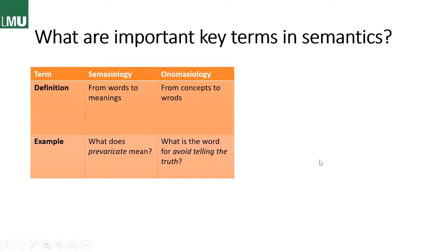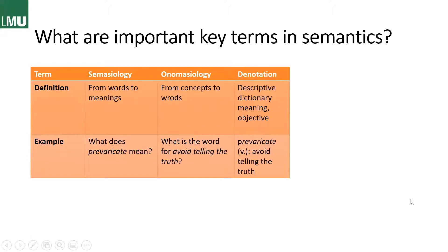I chose this example to show you both sides. Next we have denotation, which is the descriptive dictionary meaning — it is objective, not subjective. It's just the definition that doesn't include any associations whatsoever that you make with the word. Here we have 'prevaricate': verb, meaning 'avoid telling the truth.'